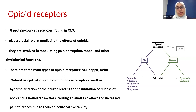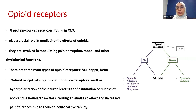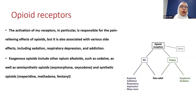Both natural and synthetic opioids can bind to these receptors and work as agonists, leading to hyperpolarization of neurons, which inhibits the release of nociceptive neurotransmitters — causing the analgesic effect and increasing pain tolerance due to reduced neuronal excitation. The activation of mu receptors in particular is responsible for both pain relief and the addictive potential of these drugs.